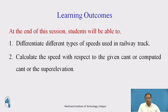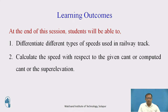Students will also be able to calculate the speed with respect to the given cant, computed cant, or super elevation. In the previous session, we discussed about the various types of cants — equilibrium cant, cant deficiency, cant excess, and negative super elevation. In this class, we will discuss about the different types of speeds used in the railway track.